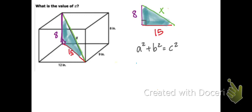Substitute in your legs, the two sides that make that right angle. And then we don't know what the hypotenuse is, that side length across from the right angle.